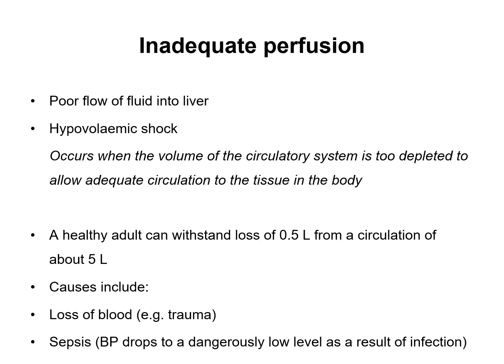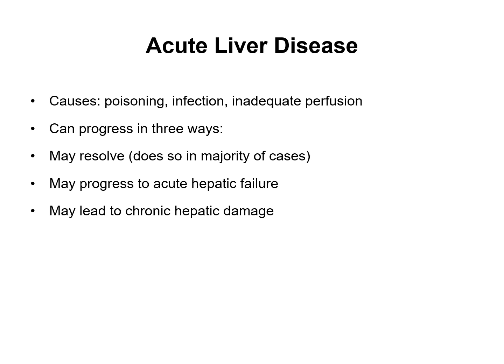Inadequate perfusion refers to poor flow of fluid into the liver, resulting in hypovolemic shock — which occurs when the volume of the circulatory system is too diminished to allow adequate circulation to the body's tissues. A healthy adult can withstand a loss of 0.5 litres from a circulation of about five litres. Causes include loss of blood due to trauma, or sepsis — bacteria in the blood — where blood pressure drops to a dangerously low level as a result of infection.